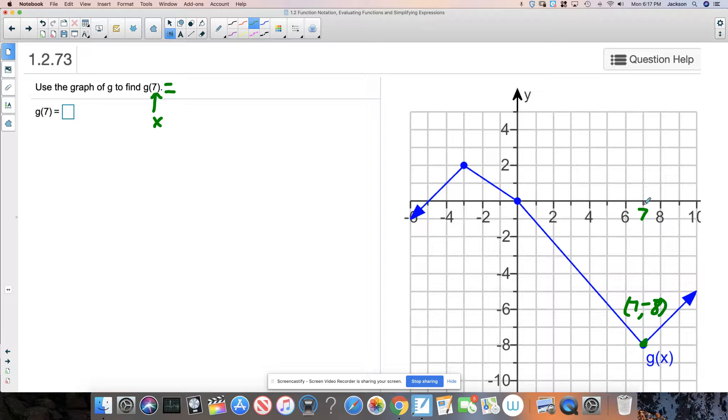So when seven is the input into this function, the output is negative eight. And that's why this point has coordinates seven, negative eight. So G of seven, think of this as what is the output for function G when the input is seven?